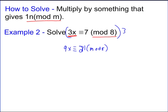Well, 9x is the same as 1x using modular arithmetic. And so, 1x is equivalent to 21 mod 8. Well, 21 mod 8 is equivalent to 5 mod 8. So, the solution to this problem is just 5 mod 8.